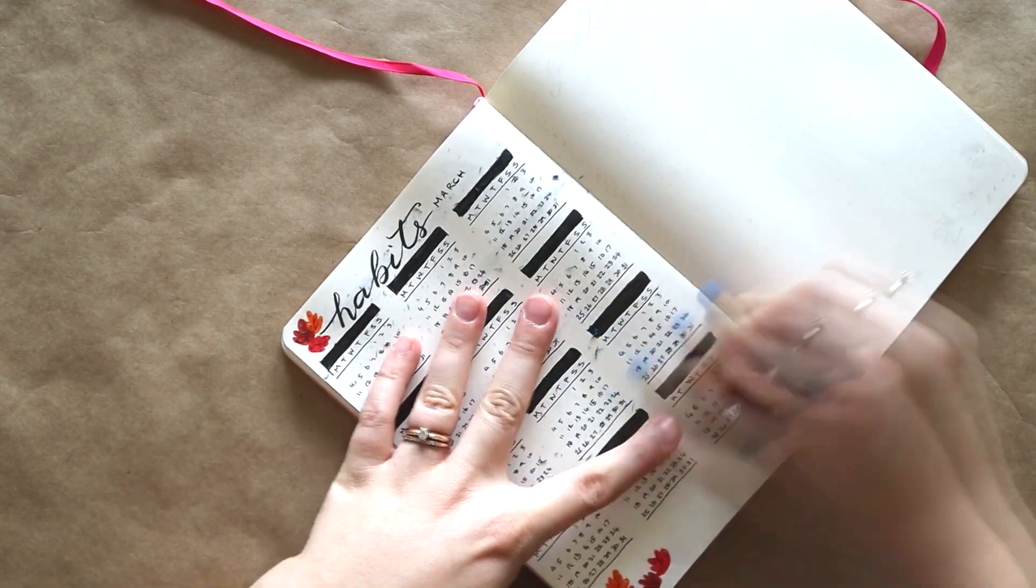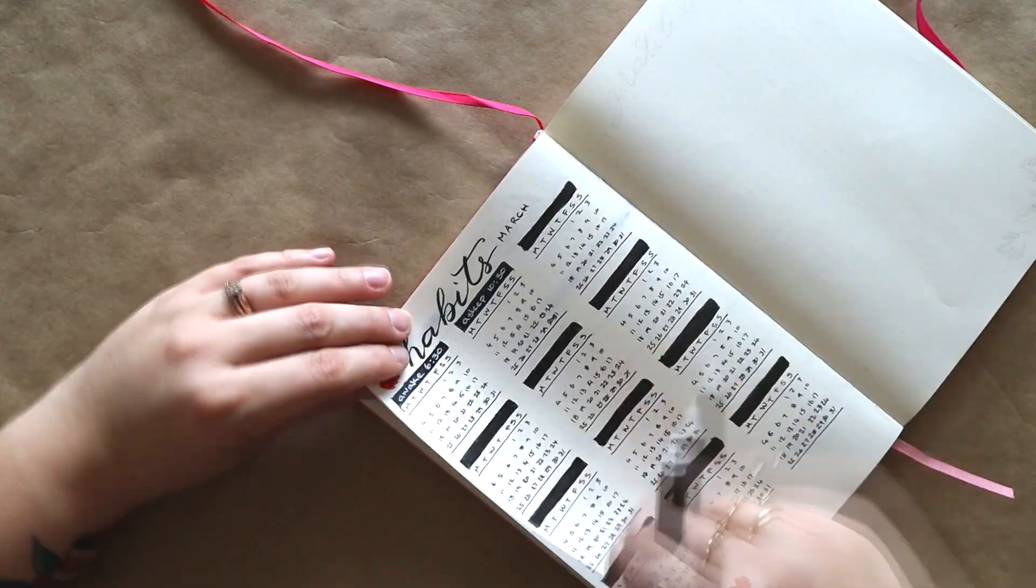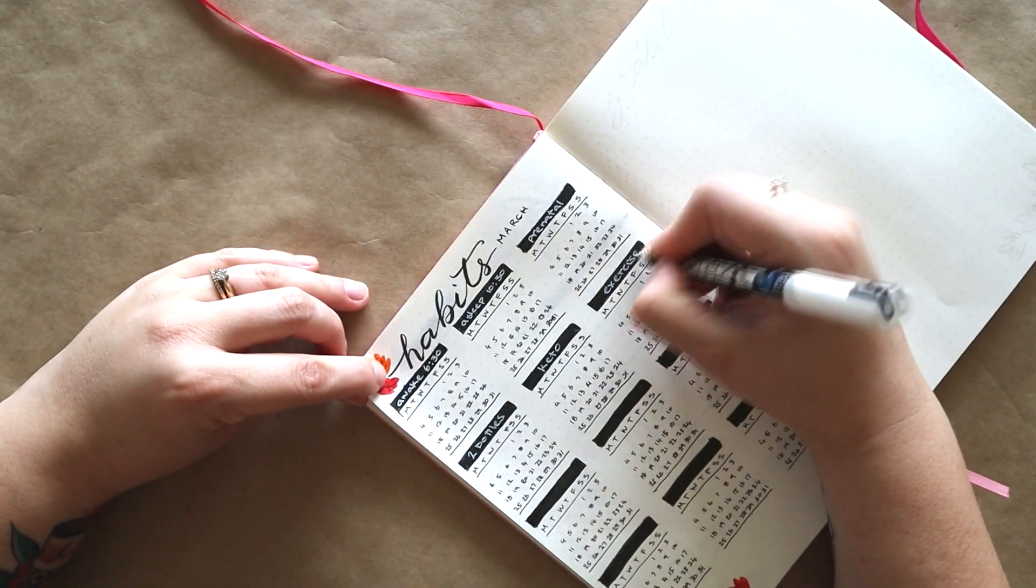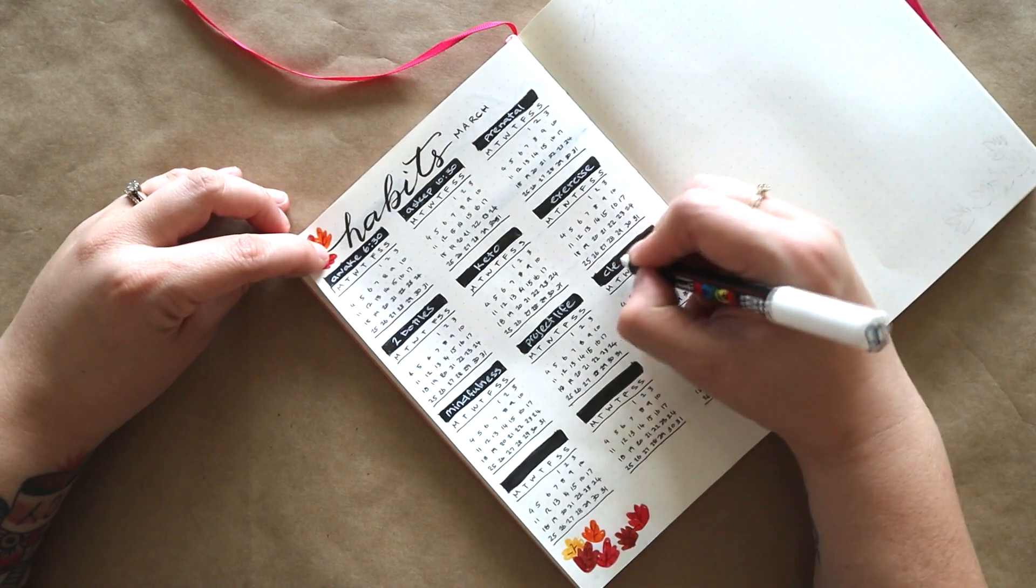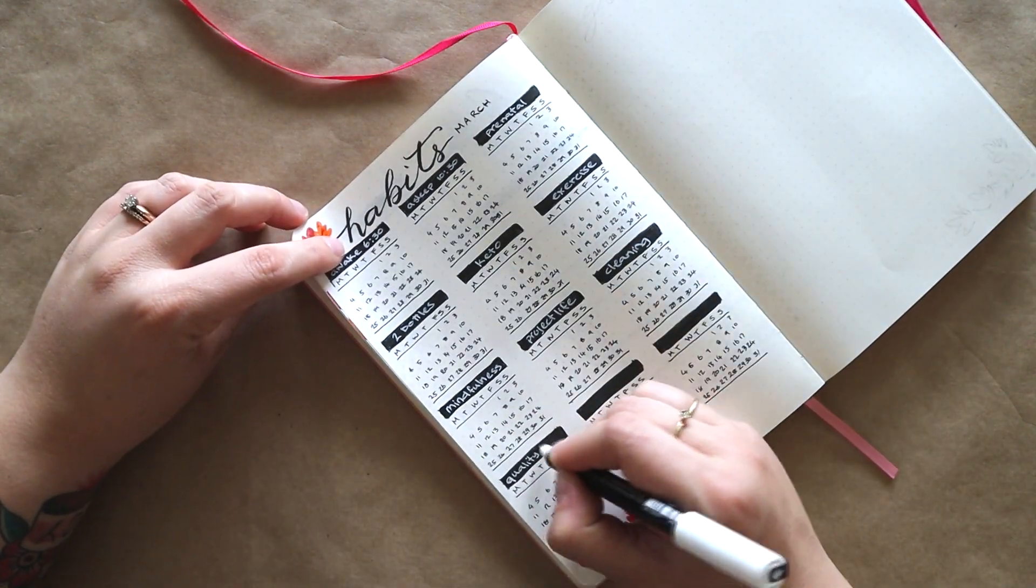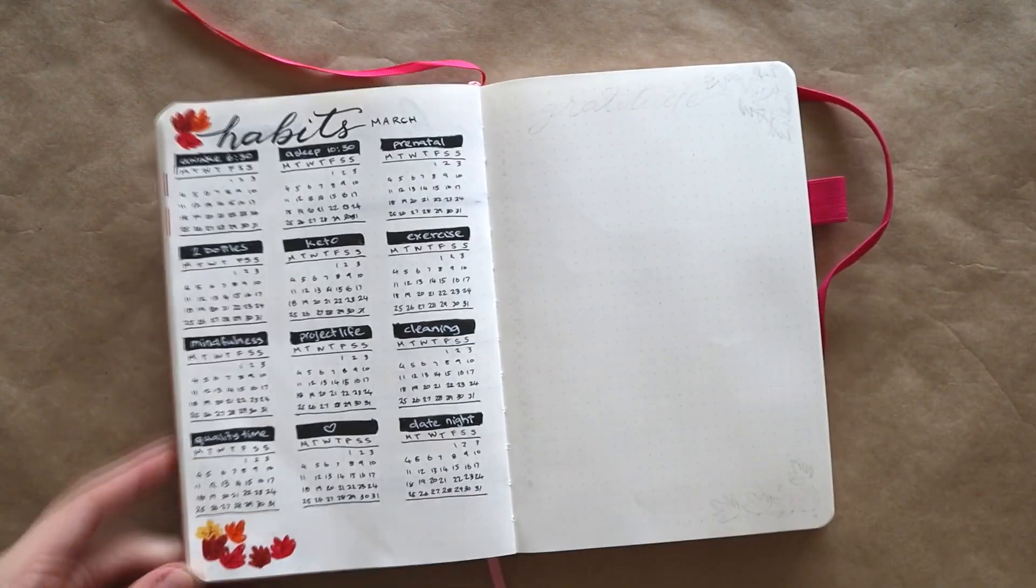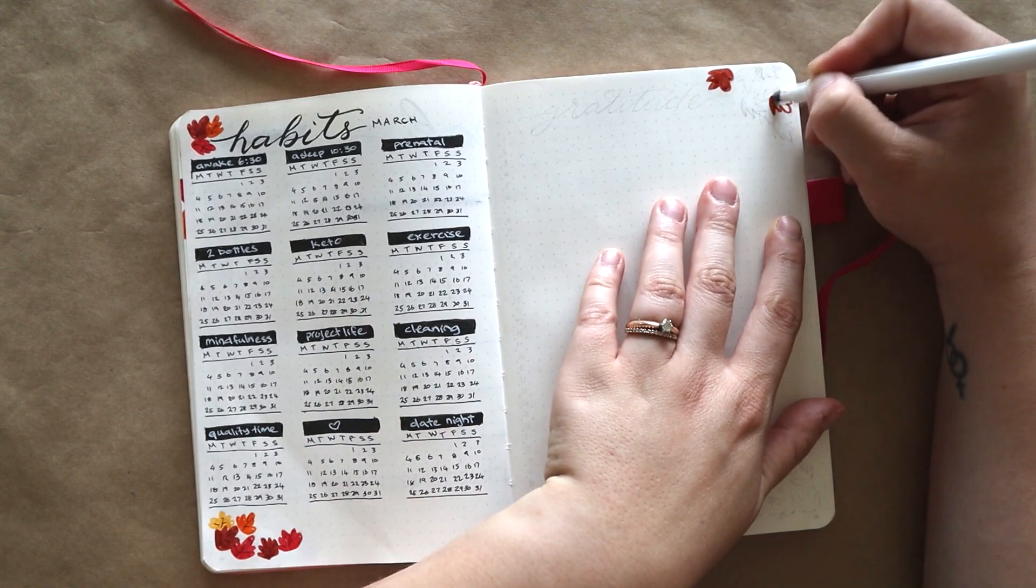Again, I'm using my white paint pen just to write in each header for what I will be tracking that month. Moving on to my gratitude page, this is nice and simple. First I'm just going to do the leaves to bring all of the beautiful colors over onto this page as well.